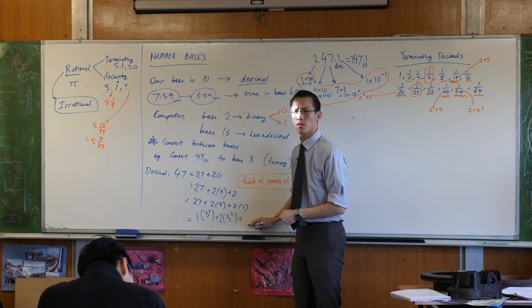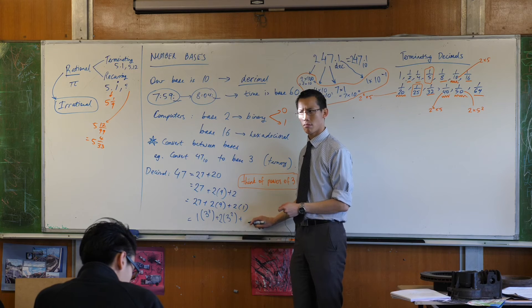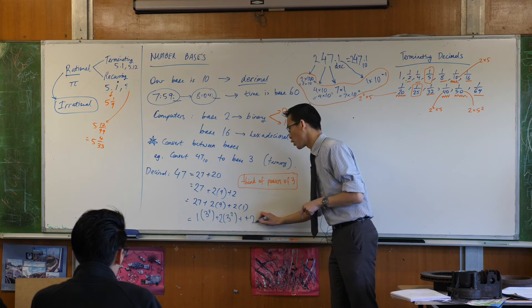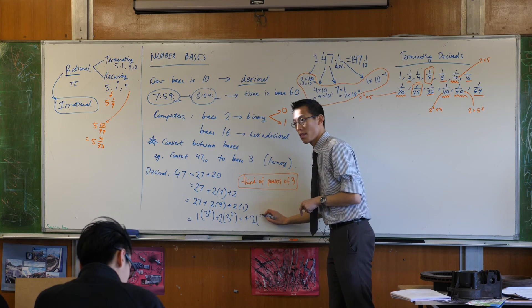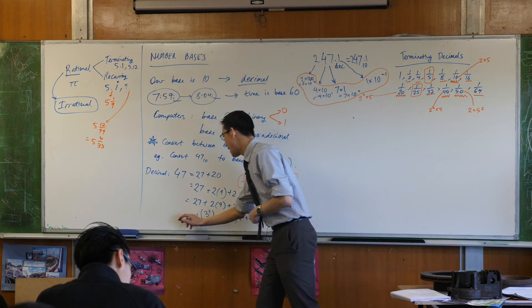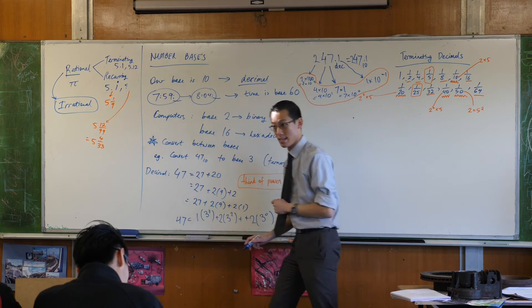How many lots of 3 to the 1 do you have? I don't have any of those. Keep that in mind. And then I've got 2 lots of 3⁰. Is that ok? That's what 47 is.